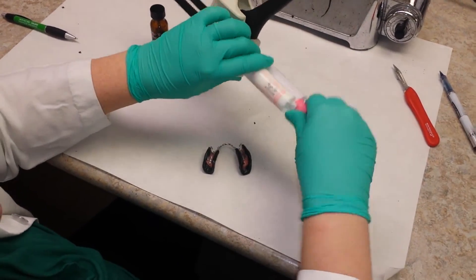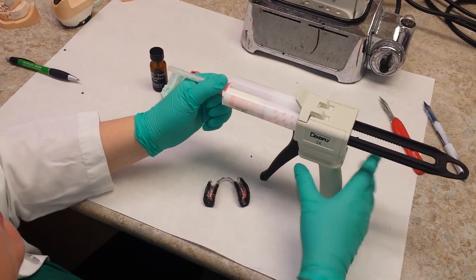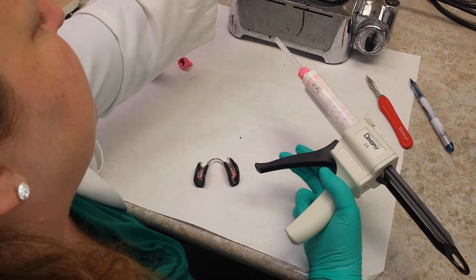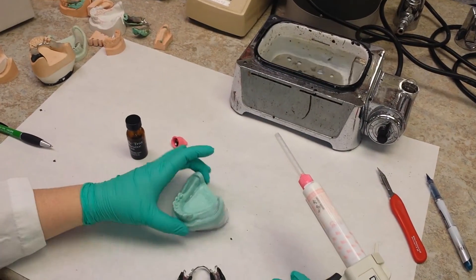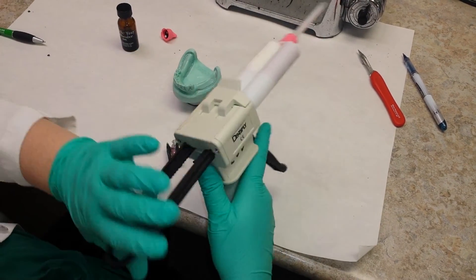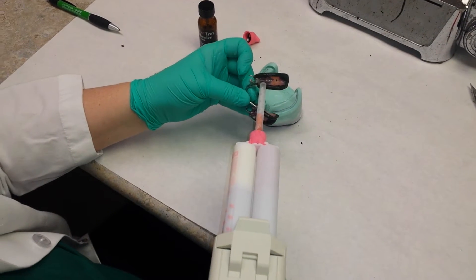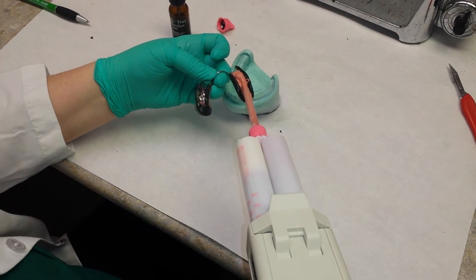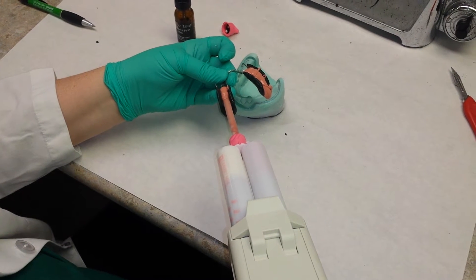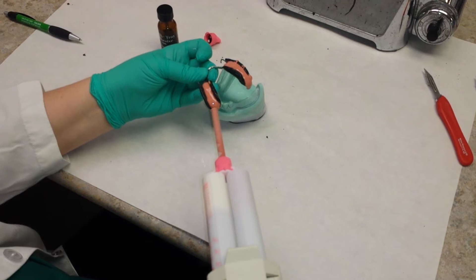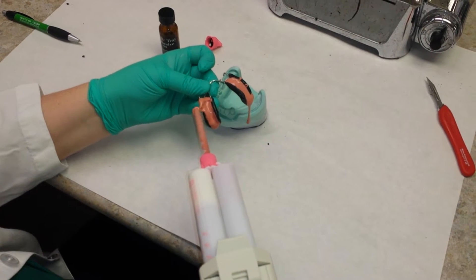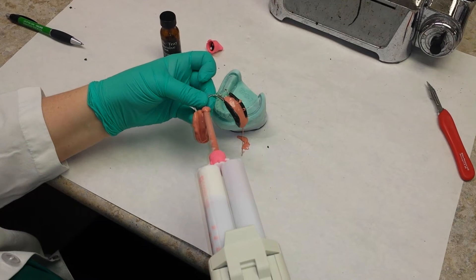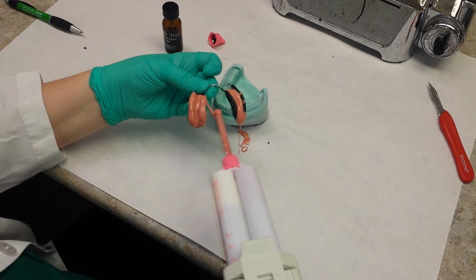I'm going to be using a light body impression material. This happens to be Examix, and then I'm going to be placing it on the cast. When you place the material into the impression, you don't want to just fill the impression tray like that like maybe you normally would. Instead, you want to actually move the impression material onto the borders. Move it out of the middle onto the borders so you have the same amount of material on the border as on the inside.